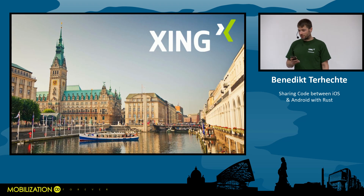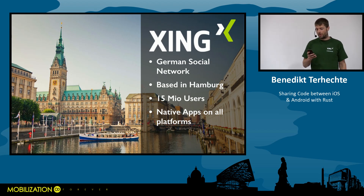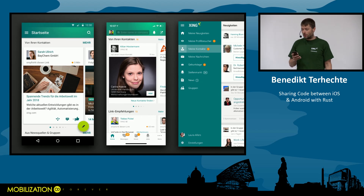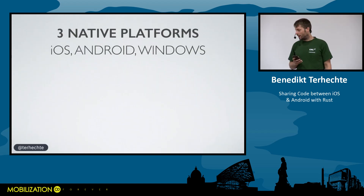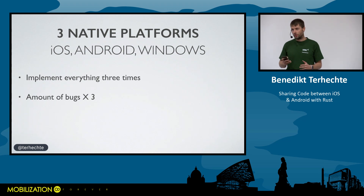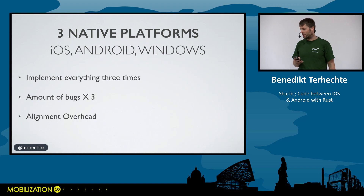I work at Xing, which is a social network in Hamburg with around 15 million users. We have three mobile apps that are all native — a native Android app, a native iOS app, and even a native Windows app. When you have three native apps, you realize there's a lot of pain because you implement everything three times, bugs are multiplied by three, and there's a lot of alignment overhead making sure the logic is the same for all three targets.